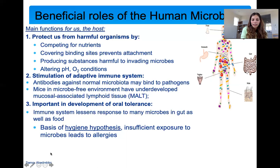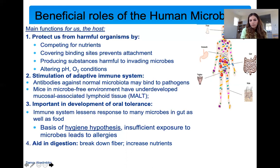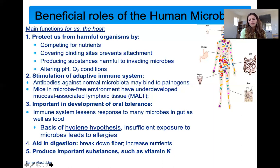This is the idea of the hygiene hypothesis — that insufficient exposure to microbes leads to allergies, meaning you really should get exposed to a lot of microbes because this is how you build your immune system. Our microbiome also aids in digestion of food. All the bacteria in your large intestine help with breaking down food and increasing nutrient uptake. They also produce important substances like various vitamins. So to summarize, the human microbiome protects you against harmful organisms, stimulates your adaptive immune system, helps develop oral tolerance to food, aids digestion, and produces vitamins.